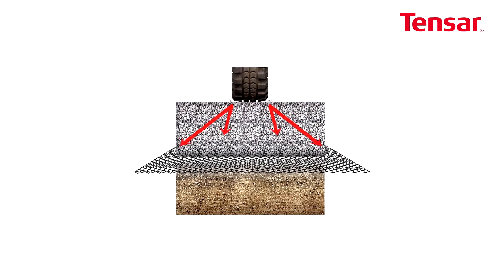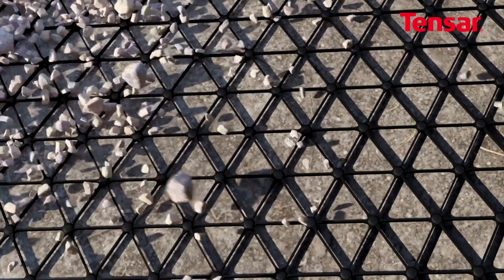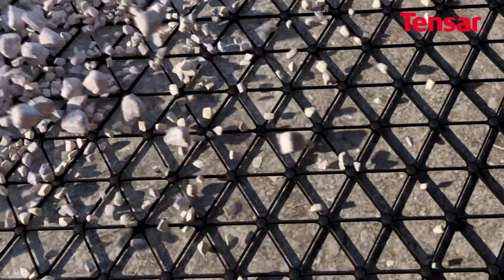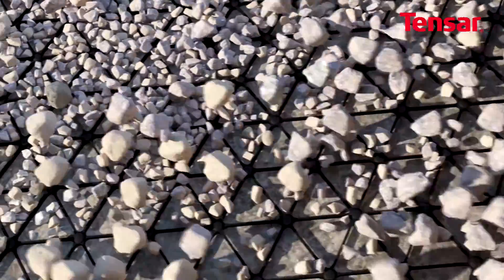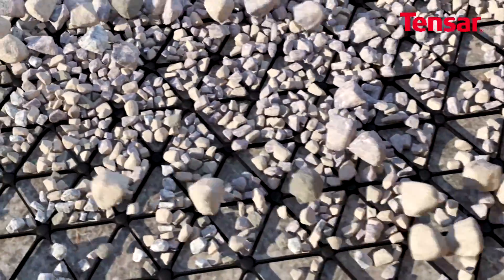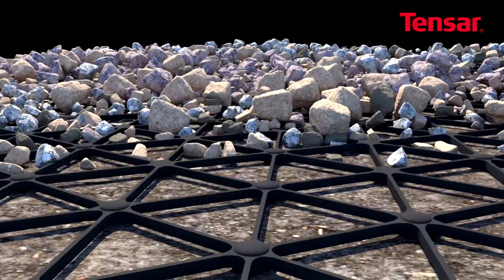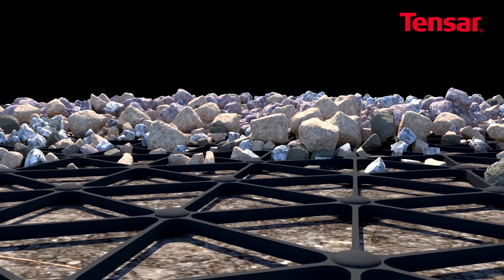As load is applied, the unbound granular fill mechanically interlocks with the Triax Geogrid. The granular particles partially penetrate and project through the Geogrid's apertures, confining and restraining them from moving laterally, thus increasing the fill's bearing capacity and ability to carry the imposed load.